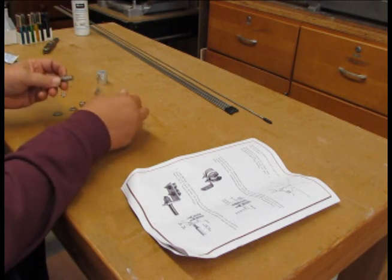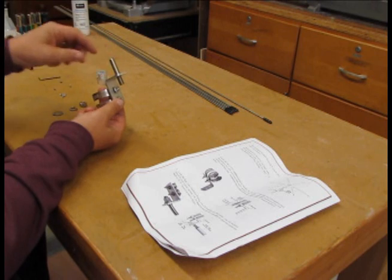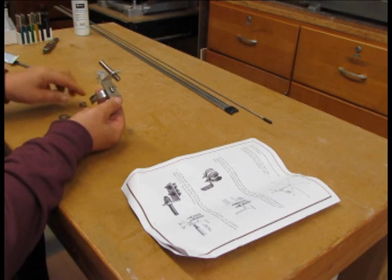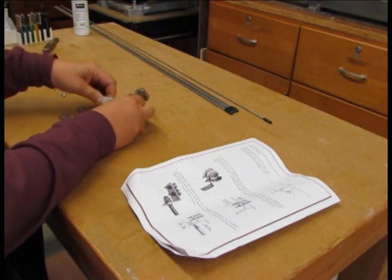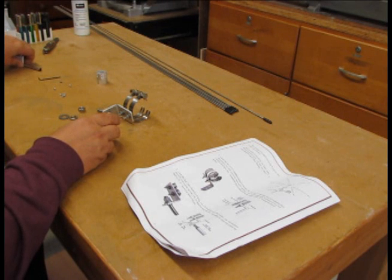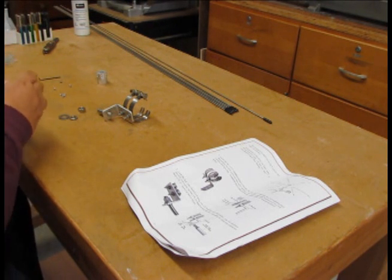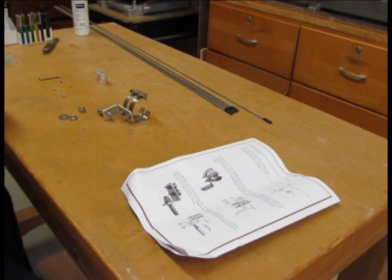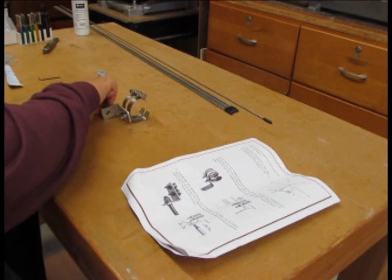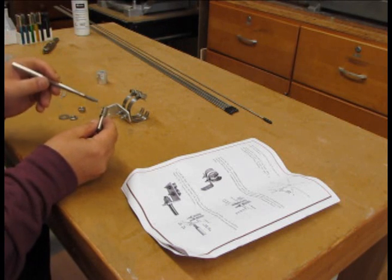Next we want to mount this stainless steel post by using the included hardware but first we'll be putting some of this anti-seize compound on the stainless steel hardware which will pretty much guarantee years of service without any issues.